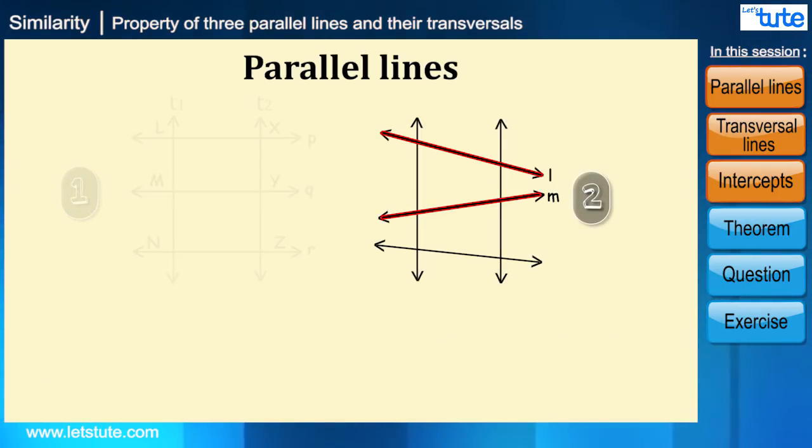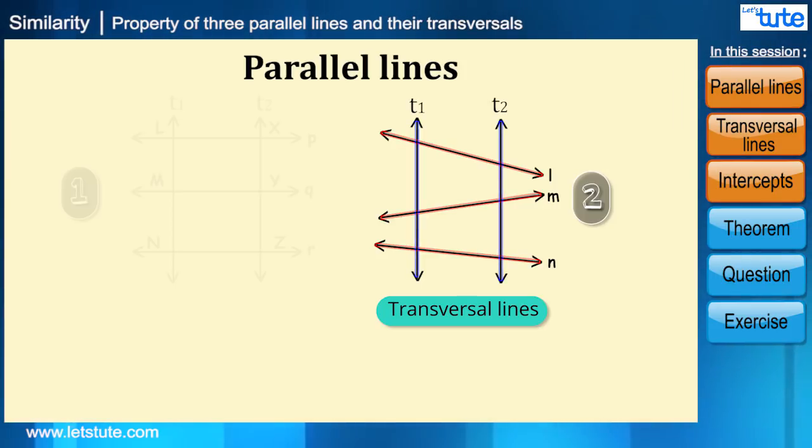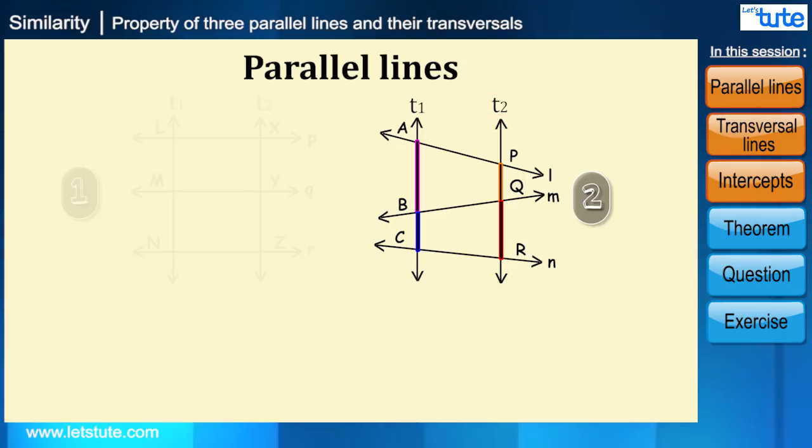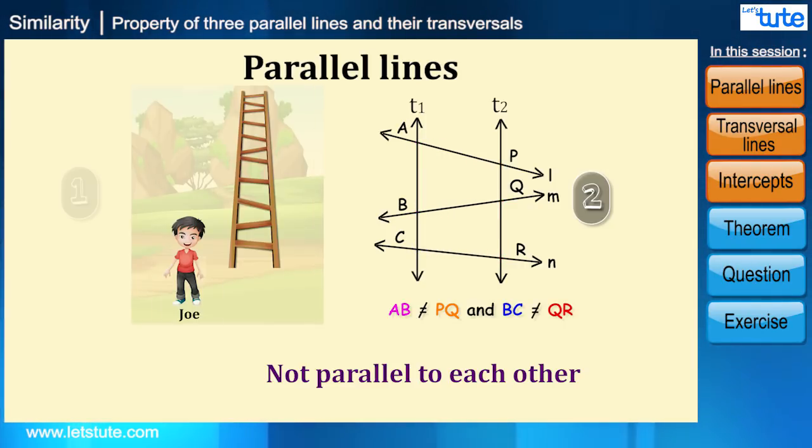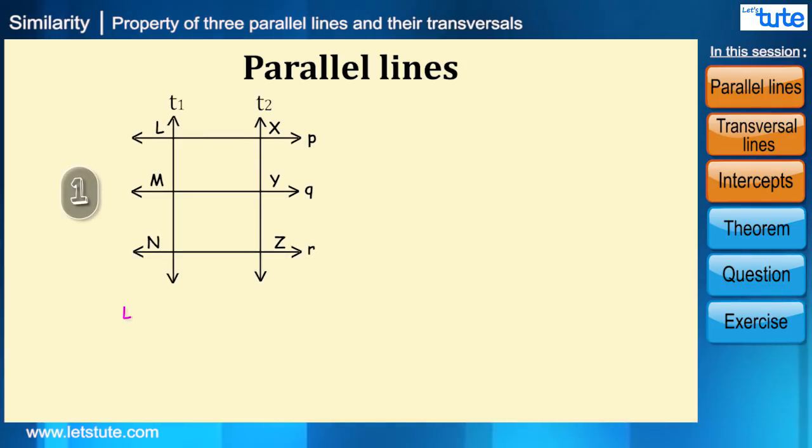And in the second figure, let's say the lines L, M, and N intersect transversal lines t1 and t2, and AB and BC are intercepts on transversal t1. Here if we will see carefully, AB is not equal to PQ and BC is not equal to QR. This is the reason why Joe was feeling difficulty while climbing the ladder, as the steps were not equidistant from each other. That is, they were not parallel to each other. Also we just saw that LM equal to XY and MN equal to YZ.